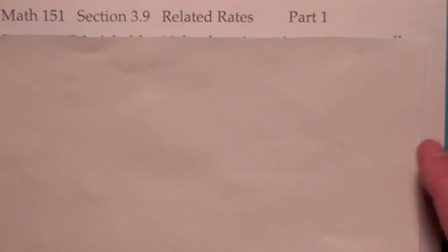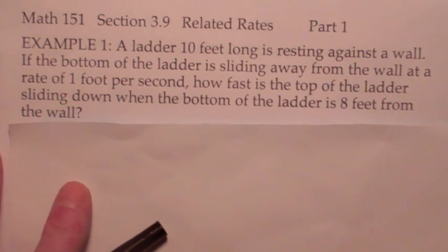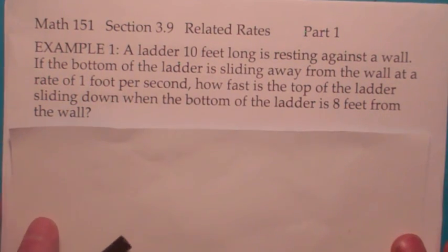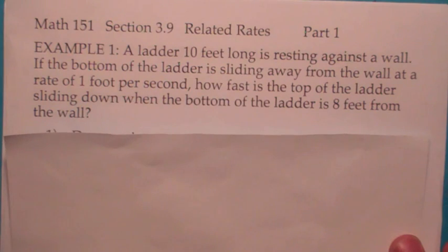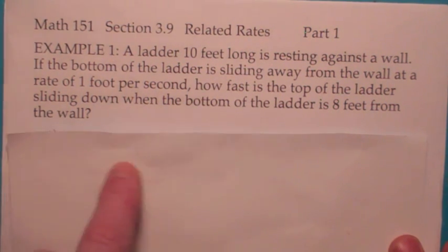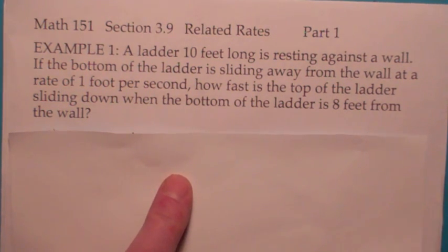Also follow the procedure I'm going to show you. If you follow the procedure, you'll find it's not that bad really. This first example is called the ladder problem. In this case, we have a 10-foot ladder, and you're pulling the bottom of the ladder away from the wall at a rate of 1 foot per second. The question is, how fast is the top of the ladder sliding down the wall when the base of the ladder is 8 feet from the wall?